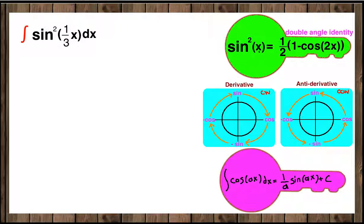Hi everybody, this time we're going to integrate sin²(1/3 x) dx. For this integration we need to know the double angle identity for sin²(x), which is 1/2 times (1 - cos(2x)).